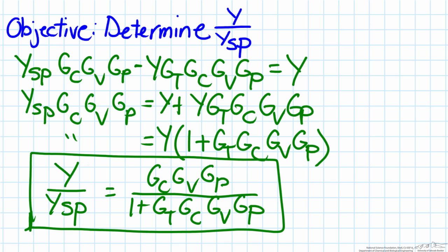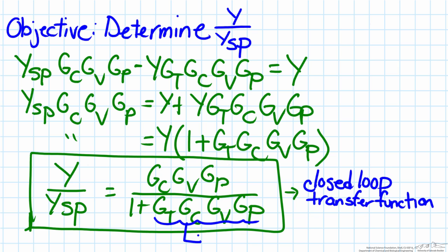This is a feedback control loop. This transfer function is also known as the closed loop transfer function. The Gt, Gc, Gv, Gp part is also often known as the open loop transfer function.